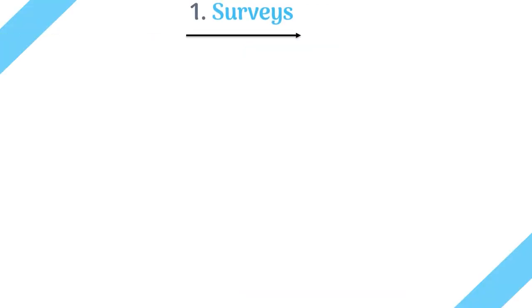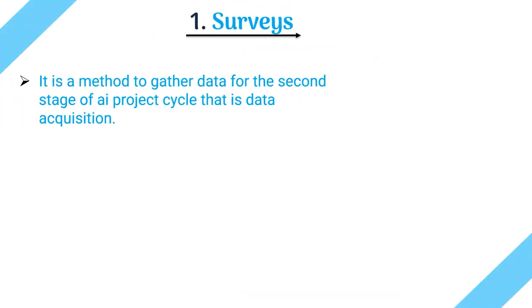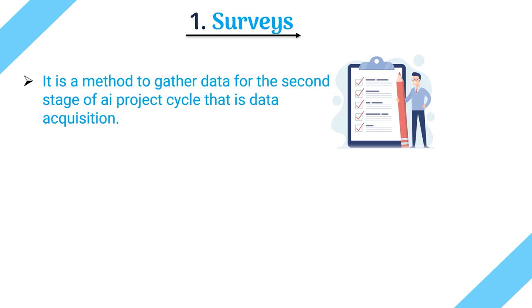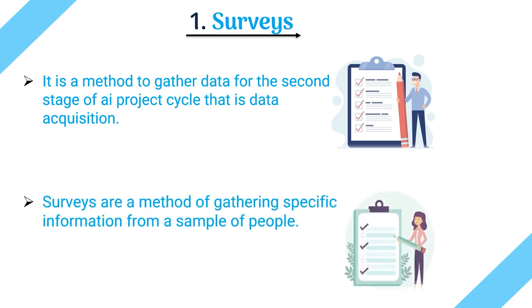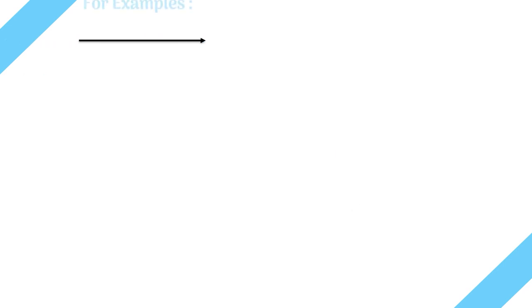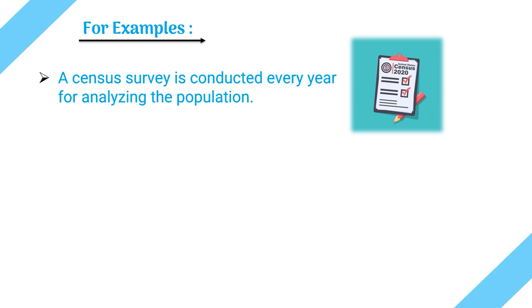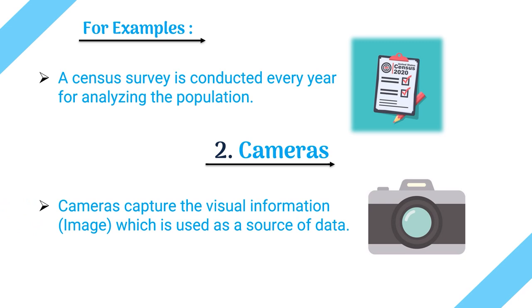The first source is surveys. A survey is a method of gathering specific information from a sample of people. It is one of the methods to gather data for the second stage of the AI project cycle — data acquisition. For example, a census survey is conducted every year for analyzing the population. Surveys are conducted in particular areas to acquire data from particular people.